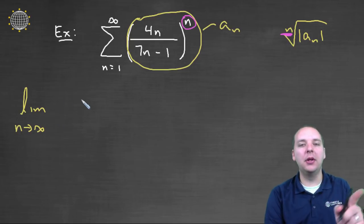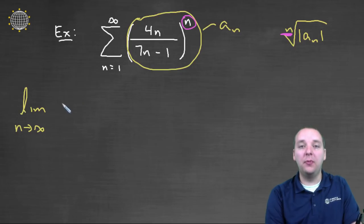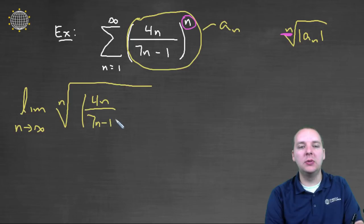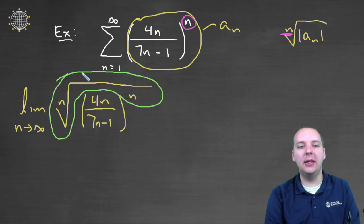now I'll write this but I'm going to erase this to write something a little bit more practical. But formally it would be the nth root of the absolute value of 4n over 7n minus 1 to the nth power. Now the reason we don't normally write it this way, and the reason I'll erase this in just a minute, is as I just got through saying, the nth power and the nth root will cancel each other.